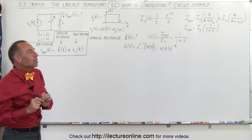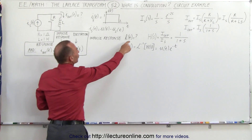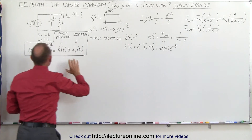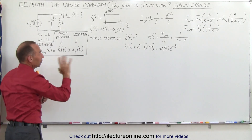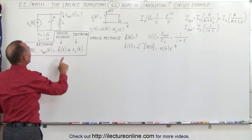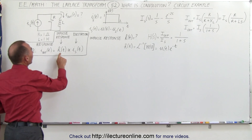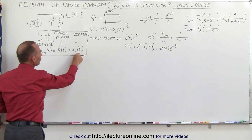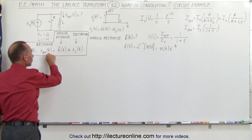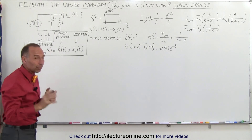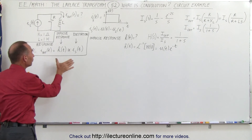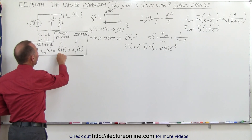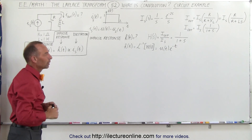Now what we're trying to do is find the impulse response of the circuit. The reason we need it is that the convolution of the impulse response with the excitation gives us the response of the circuit — that's what we're looking for. So we're going to convolve h and i: the source current i and the impulse response h of the circuit.